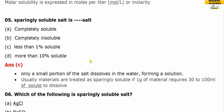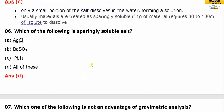Question number five: a sparingly soluble salt — examples include barium sulfate and lead iodide. These are knowledge-oriented questions. Your answer is D.